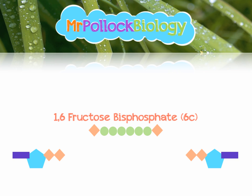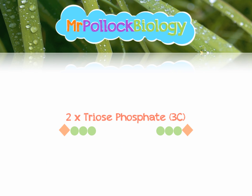This molecule we've created is really, really unstable and it doesn't hang around for very long — it splits. And when it splits, it forms two molecules of triose phosphate, which is just a three-carbon phosphorylated sugar. Triose phosphate has some other names, but we won't worry about those in too much detail until we study the same molecule in photosynthesis. For the time being, it's triose phosphate, formed because phosphorylated glucose is highly reactive and just splits.